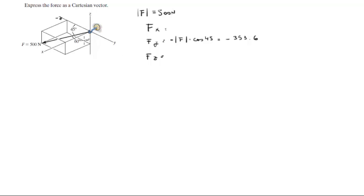Now we got the angle that it forms with the negative Z. Same trail of thought. Negative times the magnitude times the cosine of 60, which comes out to be negative 250.